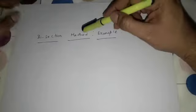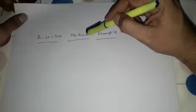Hello everyone. In today's lecture we will discuss an example problem of bisection method. In the last lecture we discussed in detail what bisection method is, how this method works, and that it works on the intermediate value theorem. In this lecture we will take up a simple example problem.